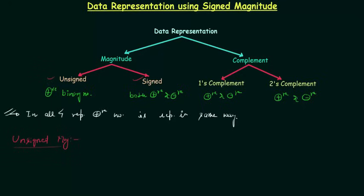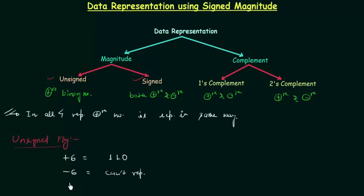If I want to represent plus 6, it will be represented as 1 1 0. If I want to represent minus 6, we can't, because in case of unsigned magnitude representation we can only represent positive binary numbers. Now we will move to signed magnitude.